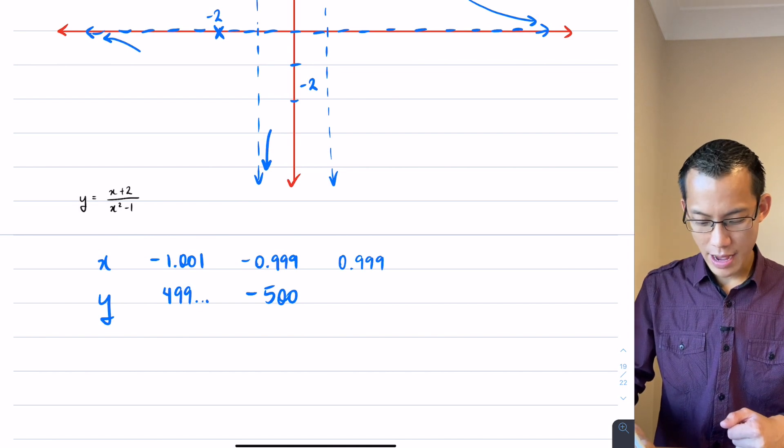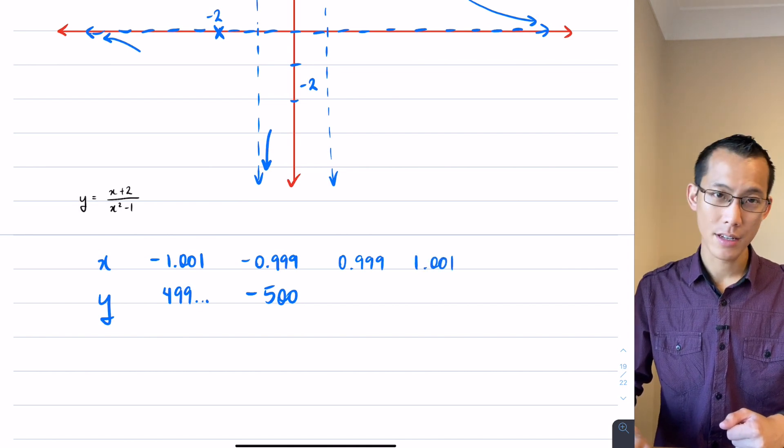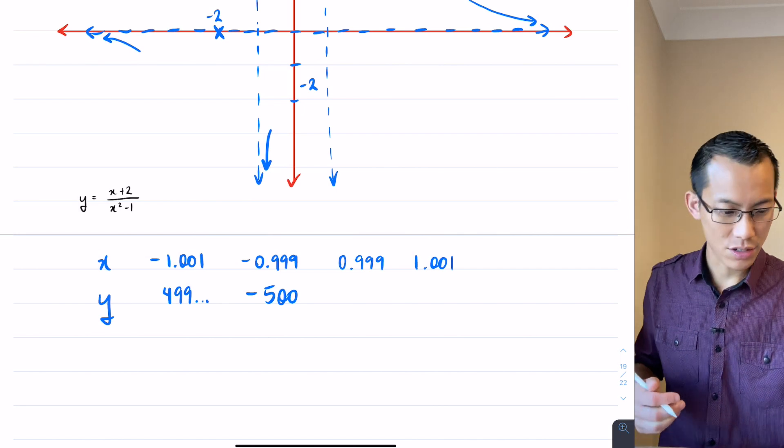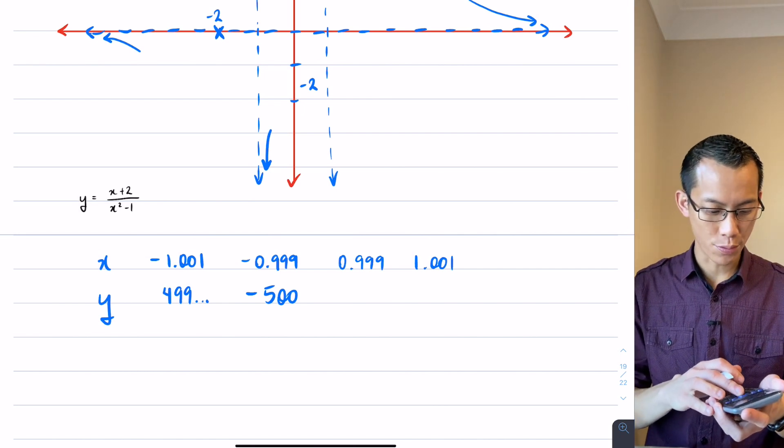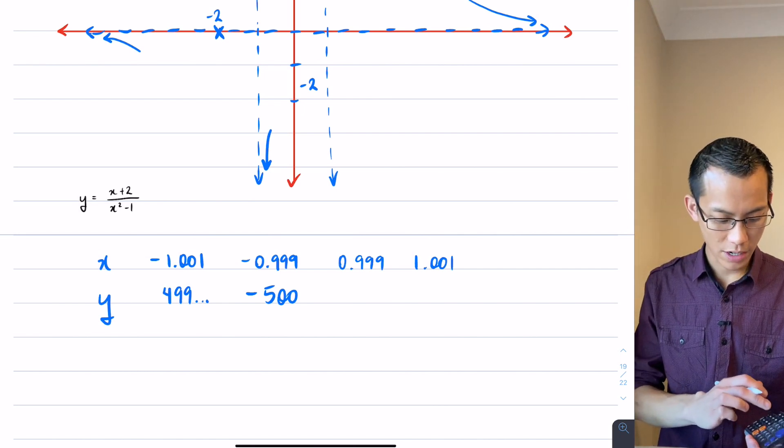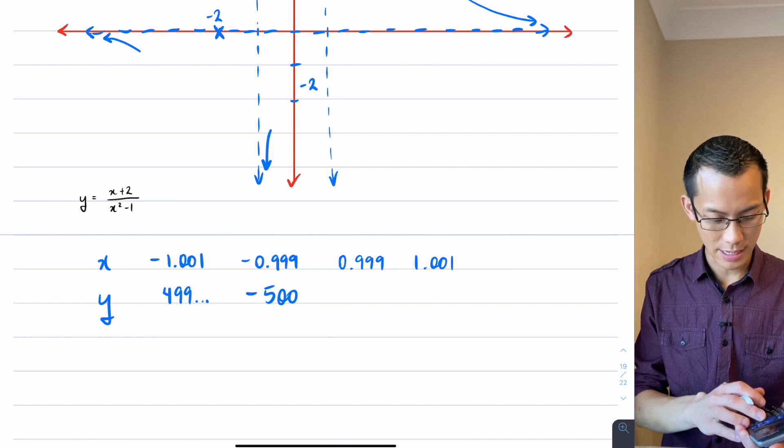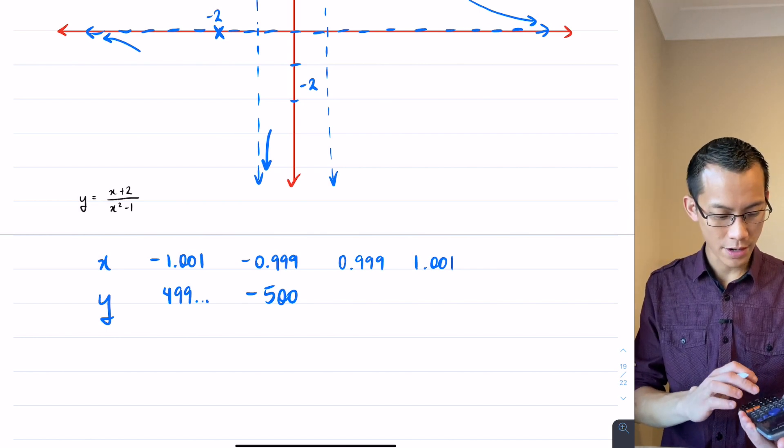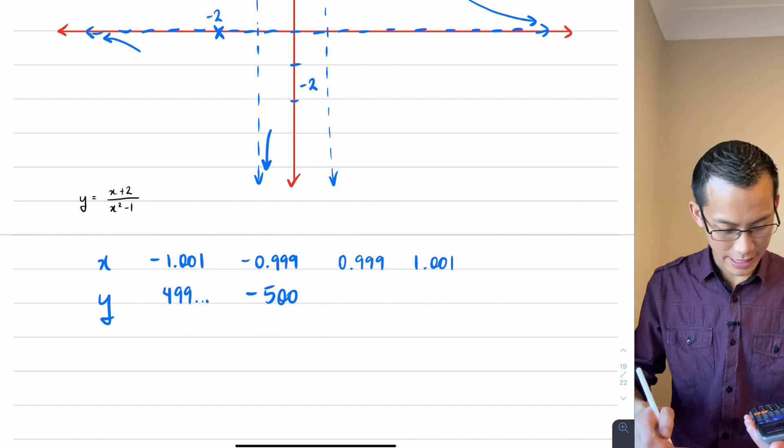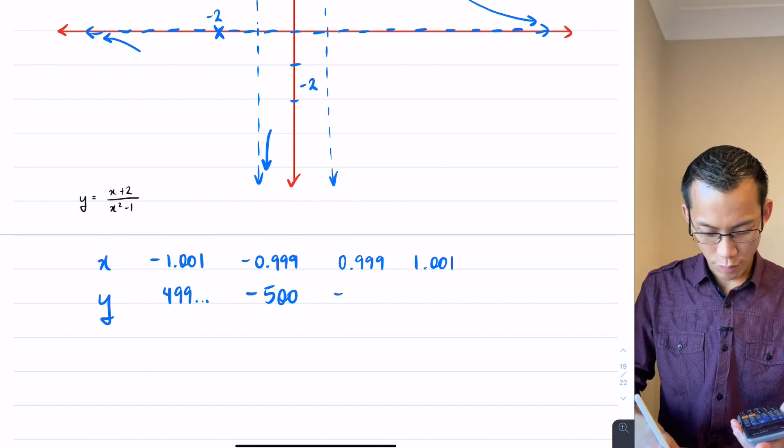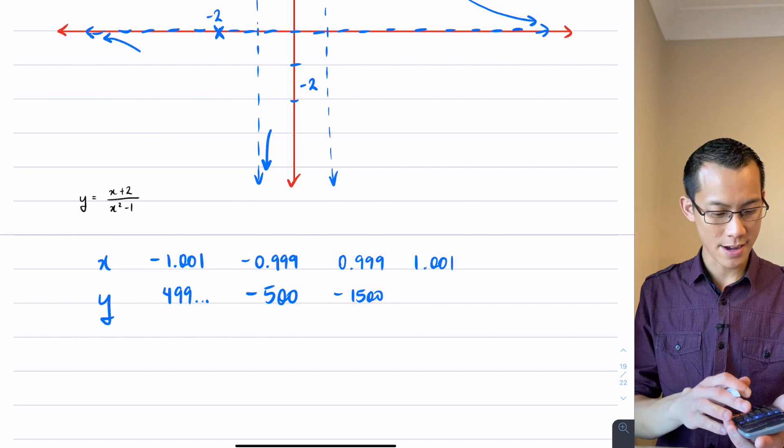And I can try out values just to the right of that asymptote. And just for the sake of illustration and to prove the concept, when I go ahead and put it in, but this time for positives instead of negatives, 0.99, I'm going to get, let's see here, wow, negative 1500 for this guy.